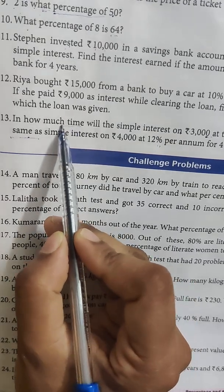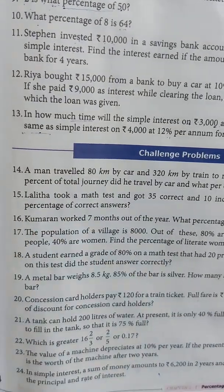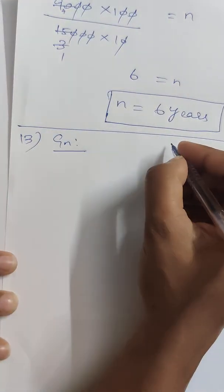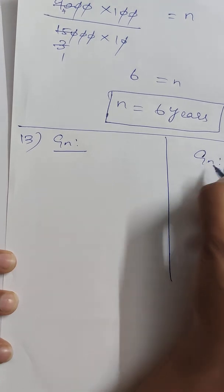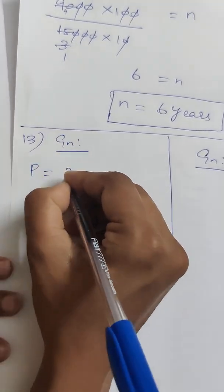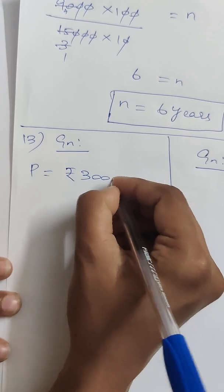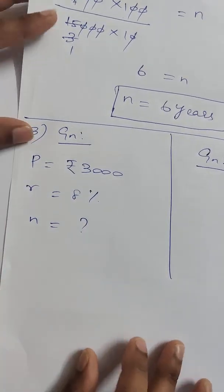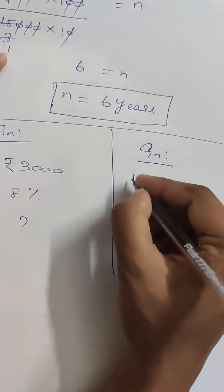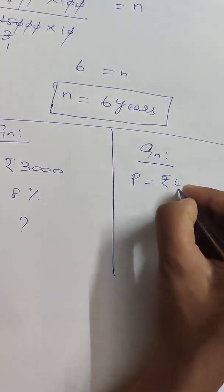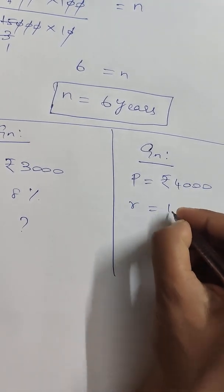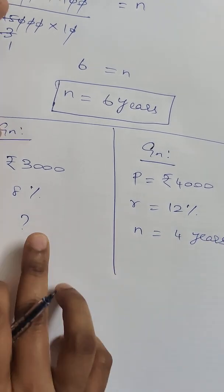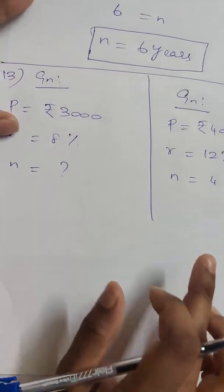We have two cases. First case: P is Rs. 3,000, R is 8%, N is unknown. Second case: P is Rs. 4,000, R is 12%, N is 4 years. Since both simple interests are equal, we set up the equation.